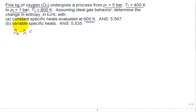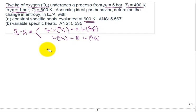Let me attack part A with the constant specific heats. We recall the equation - actually I'm going to write it two ways right here. We can put C sub P natural log of the final temperature T2 divided by T1 minus R natural log of the final pressure P2 divided by P1.